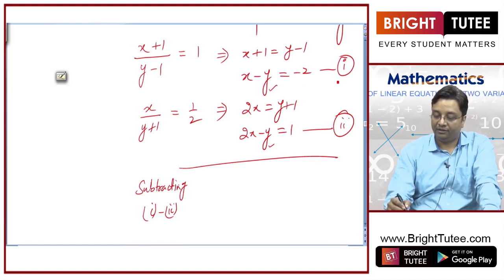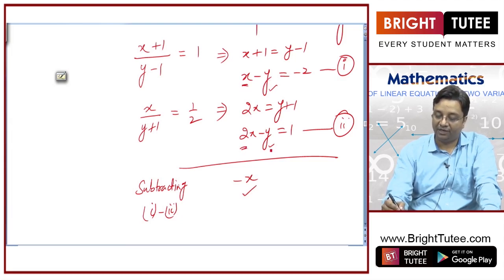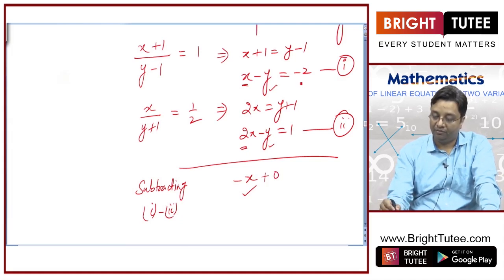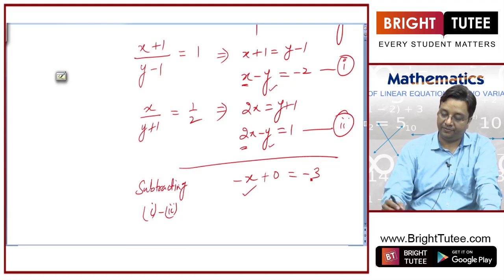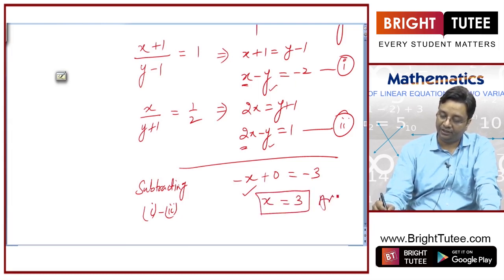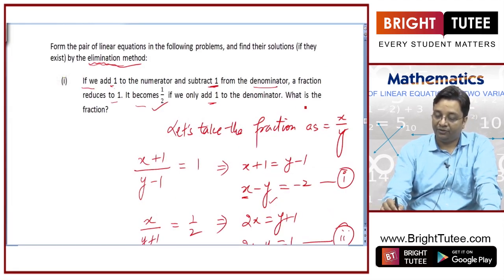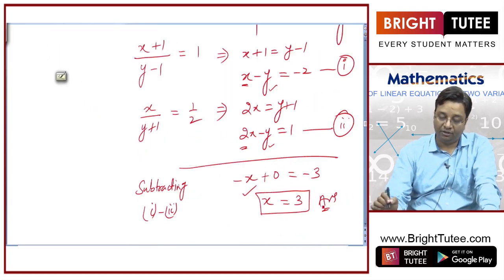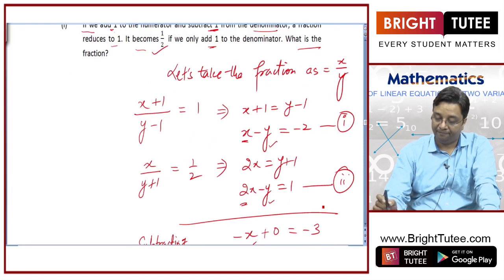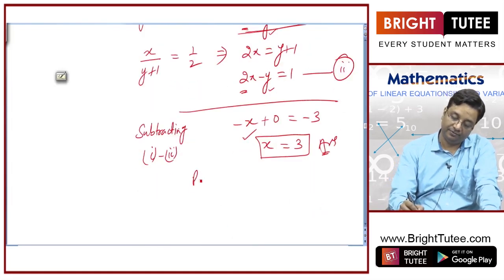Subtracting equation 1 from equation 2: x minus 2x is minus x, y terms cancel, and minus 2 minus 1 is minus 3. So, x is equal to 3. This is one of the answers, and we need to find the fraction. So we need to find y, then we will answer.